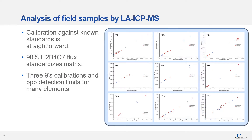This slide demonstrates the calibration of a laser ablation ICP-MS system, indicating little sacrifice to accuracy and precision. The lithium borate matrix is used to standardize the matrix response and provides three-nines correlation coefficients, as well as obtaining part-per-billion level detection limits.